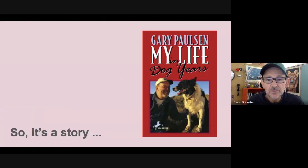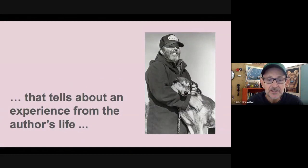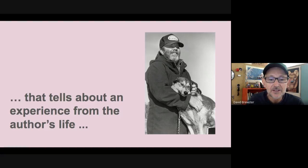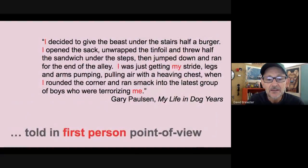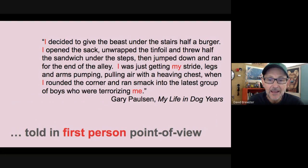Let's look at an example. First of all, it's a story — we have this book, a very short book by Gary Paulson, the same author who wrote Hatchet. The book is called My Life in Dog Years. This personal narrative by Gary Paulson tells about an experience from his life. This is not made up — he may have added details to make the story interesting, but it comes from his own life and experience with the dogs he's had. And it's told in the first person point of view, where the narrator tells his or her own story. You'll notice in this clip from My Life in Dog Years that the author uses the words I, my, and me, because he's talking about himself. This is first person — everything we're going to read and write will be first person.